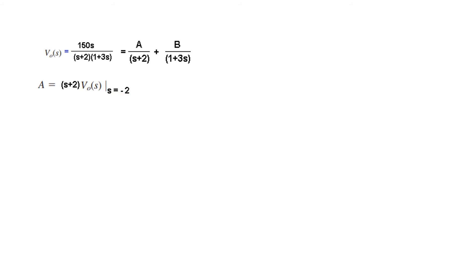then S will be equal to minus 2. And so the value of A divided by VOS, this, so S plus 2 and S plus 2 will get cancelled, so it is 150S divided by 1 plus 3S and the value of S is minus 2, putting the value, we get this to be equal to 60.